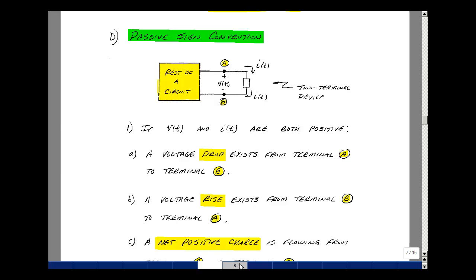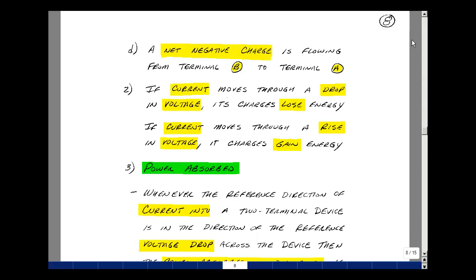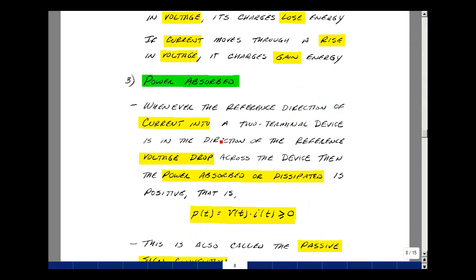You can find these definitions on the next page. Whenever the reference direction of current into a two terminal device is in the direction of the reference voltage drop across the device, then we say that power is absorbed or dissipated. It's also a positive quantity.